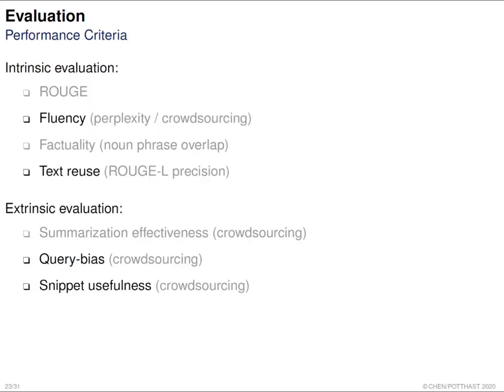To test the models, we use about 4,000 examples for automatic measurement and 100 randomly selected examples for crowdsourcing. Evaluation metrics are categorized into intrinsic and extrinsic evaluation. Intrinsic evaluation studies the overall language quality of the generated text, while extrinsic evaluation studies whether the generated text fits a certain goal. We study fluency, fertility, and text reuse intrinsically; and for extrinsic evaluation, whether snippets serve as a proper summary, are query-biased, and can be used in a search scenario.